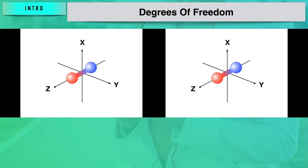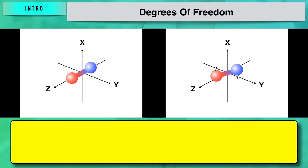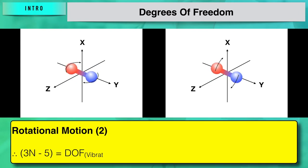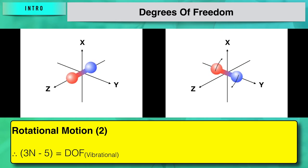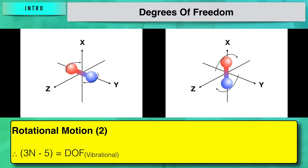Consider a diatomic linear molecule whose molecular axis coincides with the z-axis. We can observe that there are two independent rotational coordinates perpendicular to each other and also to the molecular axis. One rotational degree of freedom is about the x-axis and the other is about the y-axis. However, it cannot rotate about the z-axis as the molecule itself lies along that axis, so the moment of inertia about that axis is zero. Accordingly, it has two rotational degrees of freedom.